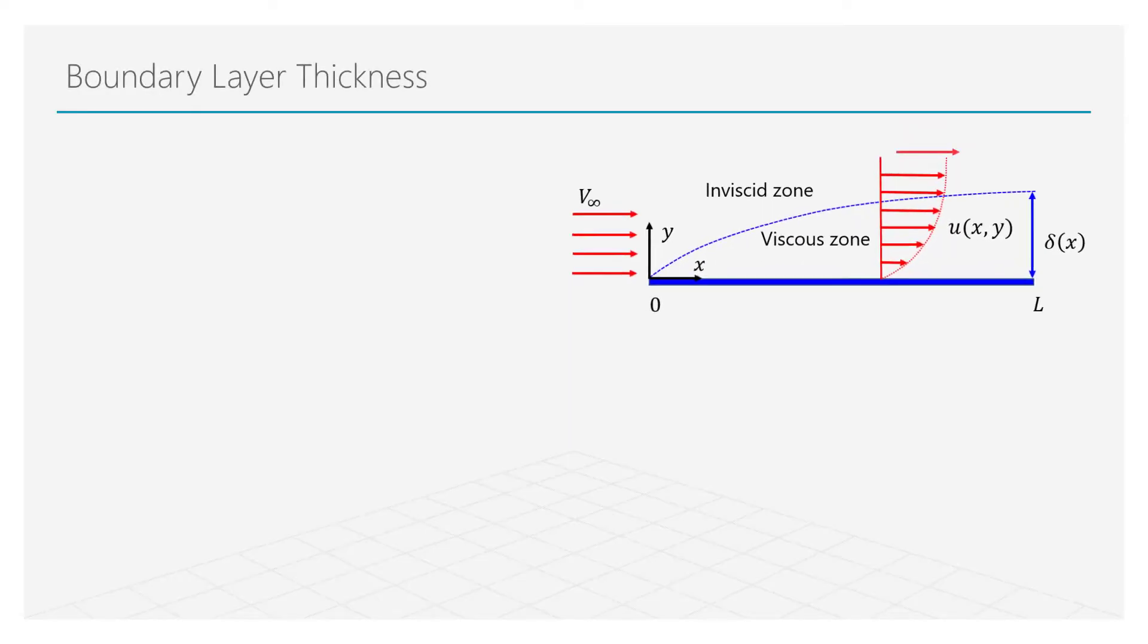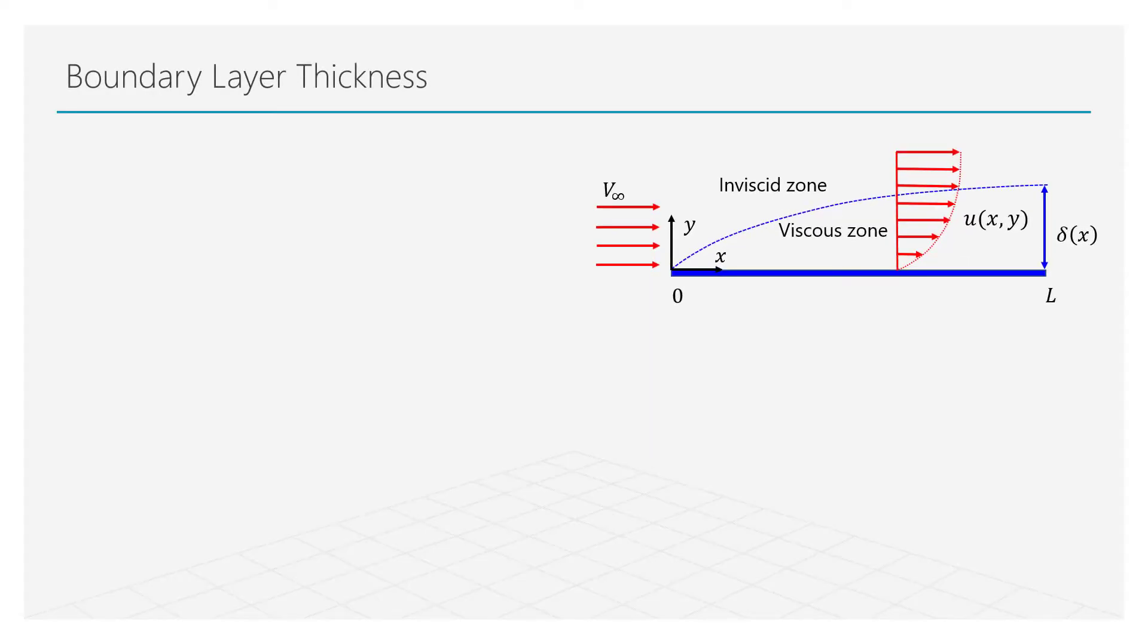The boundary layer is assumed to be thin. We can analyze the characteristic time scales of the boundary layer to define when this layer will be thin. The first time scale is connected to the convection and represents the time that a particle will take to move over the plate.